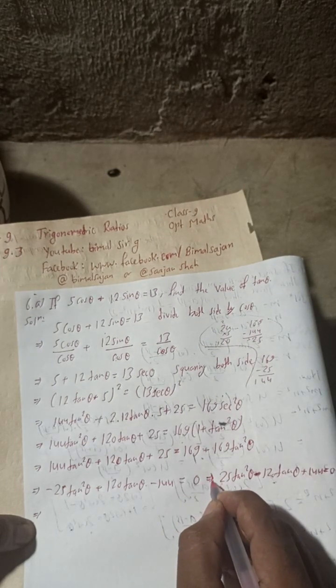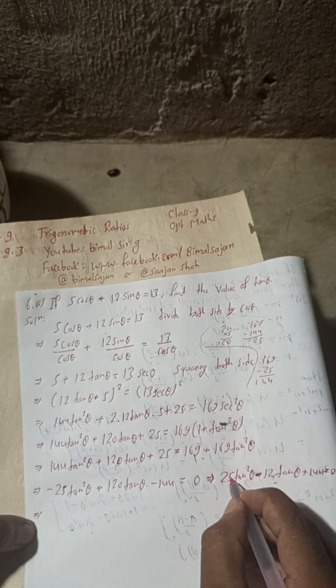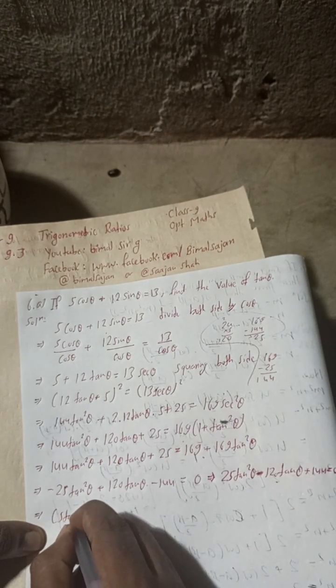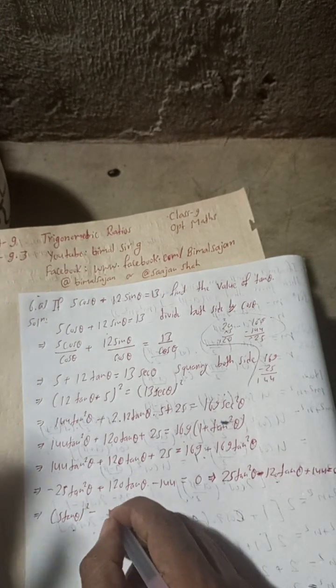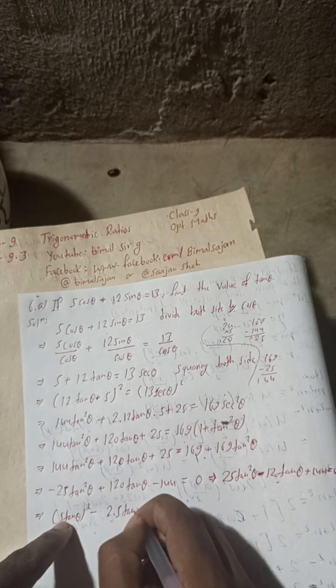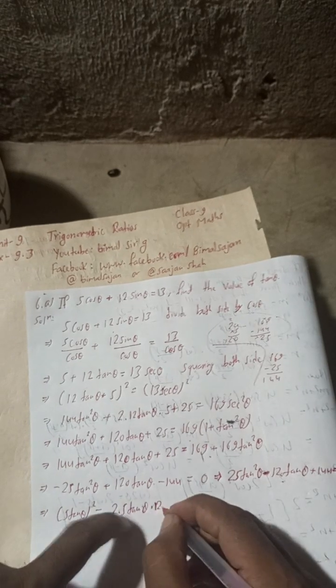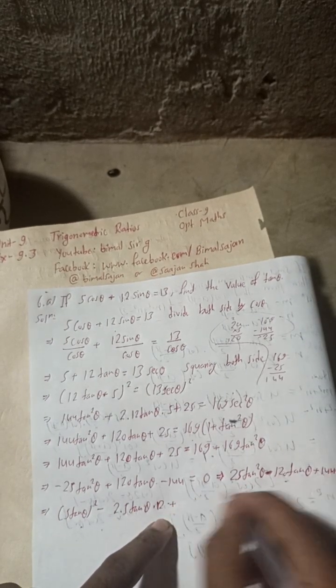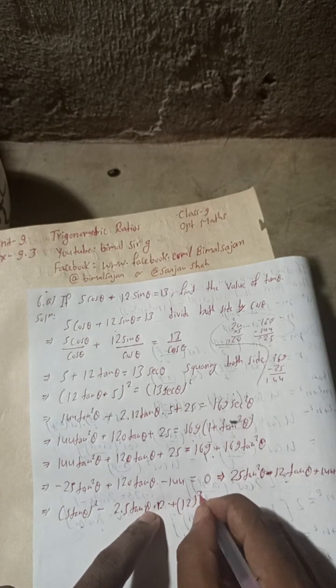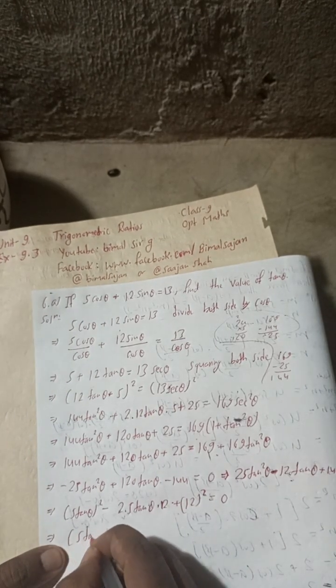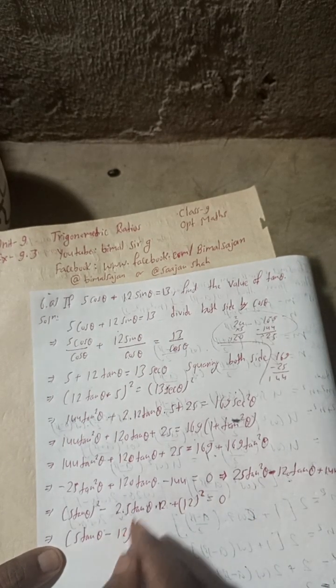Now, you can write 25tan²θ as (5tanθ)², and 144 as 12². Noting that 2×5tanθ×12 = 120tanθ, this matches the (a−b)² = a² − 2ab + b² formula. So 25tan²θ − 120tanθ + 144 = (5tanθ − 12)² = 0.